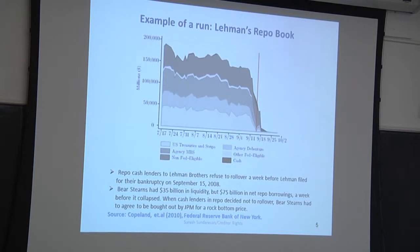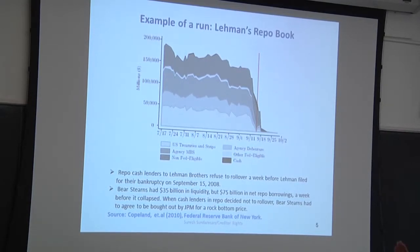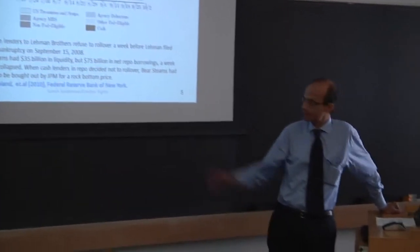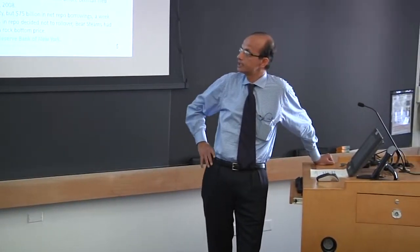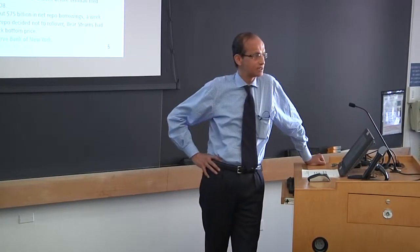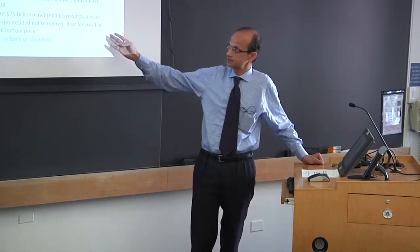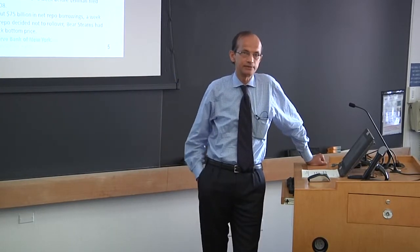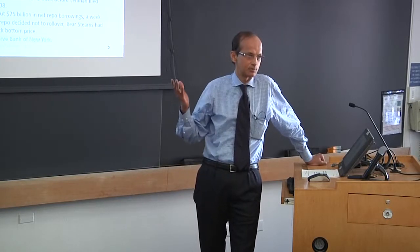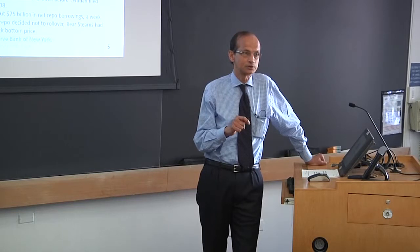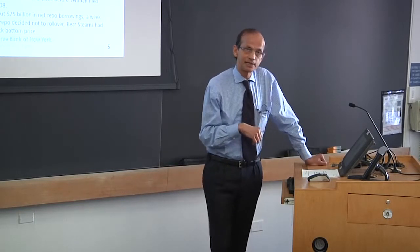I want to give a few illustrations of run risk. This slide shows what happened to Lehman's repo book, based on a study from the New York Federal Reserve Bank. One week prior to Lehman's bankruptcy filing date, repo lenders started to walk away with the collateral — regardless of whether it was US Treasury, agency, or mortgage-backed securities, they were simply running from Lehman. Similarly, Bear Stearns, a few days prior to its forced acquisition, had a very similar problem with repo lenders.